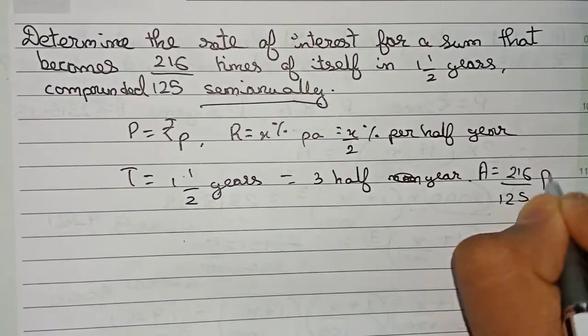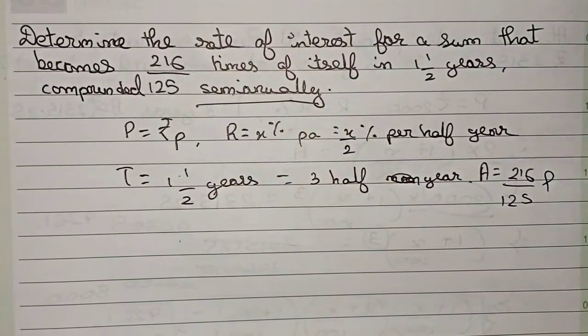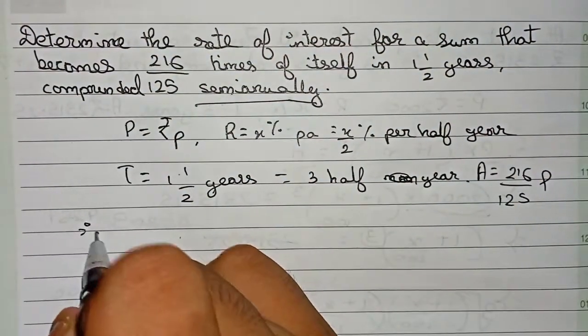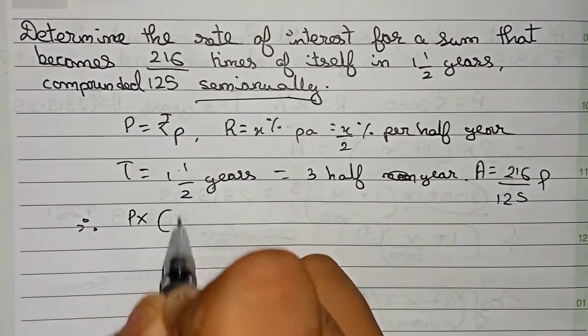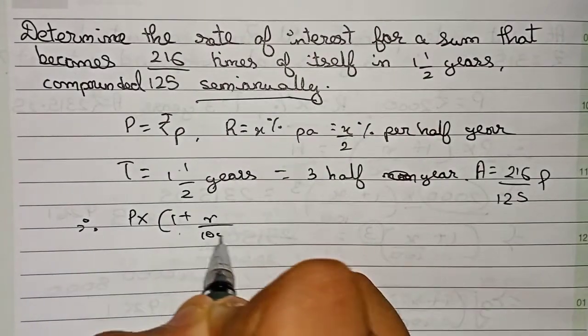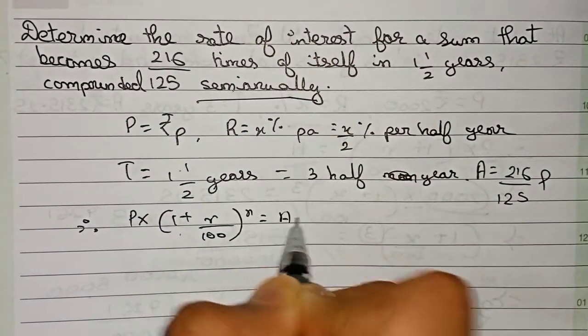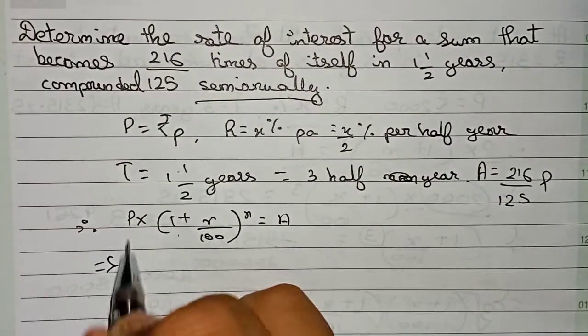So now, therefore, write our formula: that is principle into 1 plus rate by 100 to the power n is equal to the amount. So it will become principle is our P into 1 plus rate.